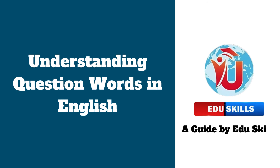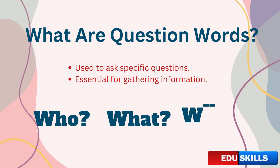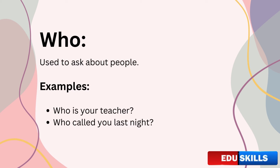Hello and welcome back to Edu Skills OET Made Easy. In today's video we are going to dive into a fundamental aspect of English grammar: question words. Whether you are preparing for the OET or just looking to improve your English, understanding question words is essential. Question words, also known as interrogative words, are used to ask questions that help us gather specific information — words like who, what, when, and more. Each question word has a unique purpose, and today we'll explore them one by one.